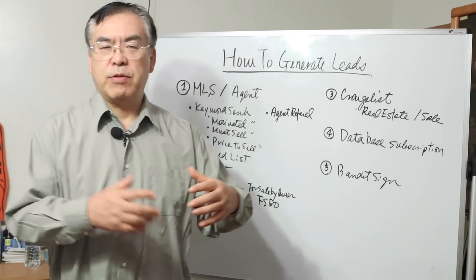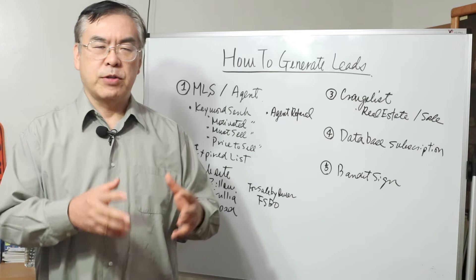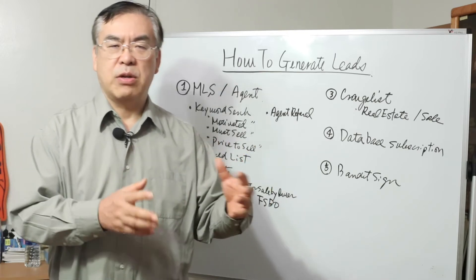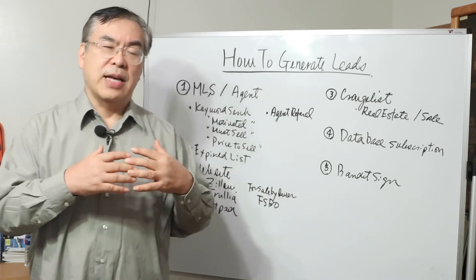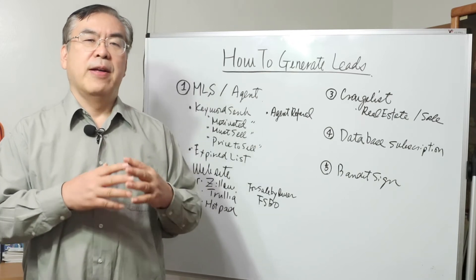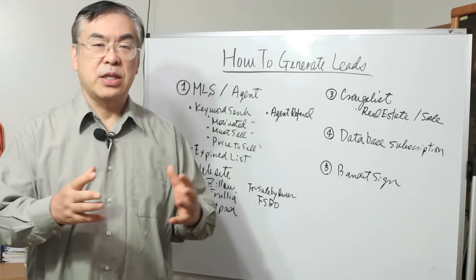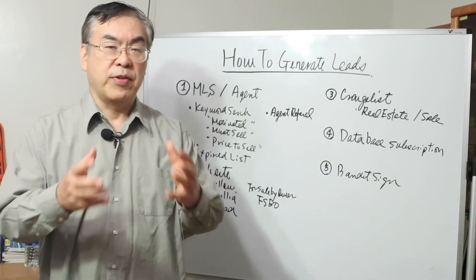Investors looking for fixing flipping deals. They have to know how to calculate numbers. If you find one deal, this is going to be a good fixing flipping deal or not. As an agent, they have to have a clear calculation formula so that they can say clearly this is a good deal for you for fixing flipping.